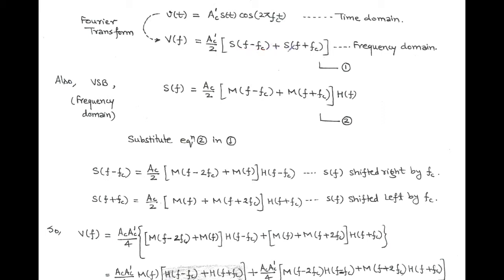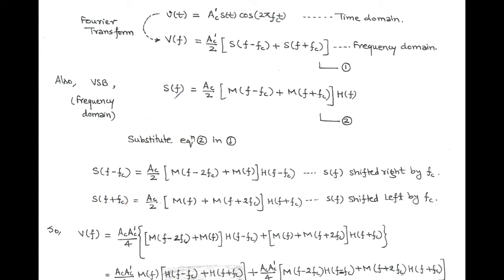For this, we have to determine S(F - Fc) and S(F + Fc) by using equation 2. First, we find S(F - Fc), which equals AC upon 2 within bracket [M(F - 2Fc) + M(F)] into H(F - Fc), where S(F) is shifted right by the carrier frequency — we put F - Fc in place of F in equation 2. And to obtain S(F + Fc), we put F + Fc in place of F, and we get AC upon 2 within bracket [M(F) + M(F + 2Fc)] into H(F + Fc).